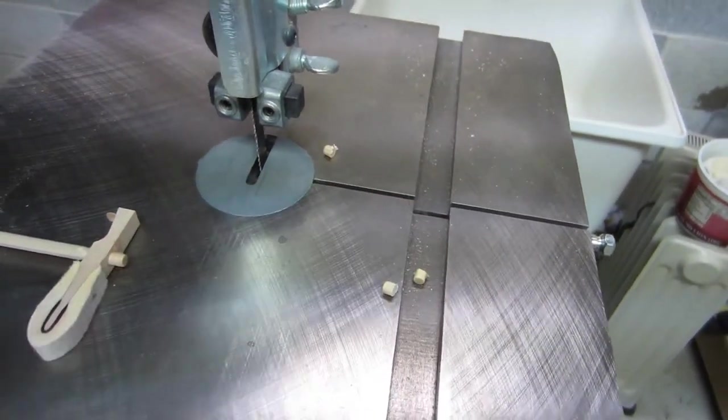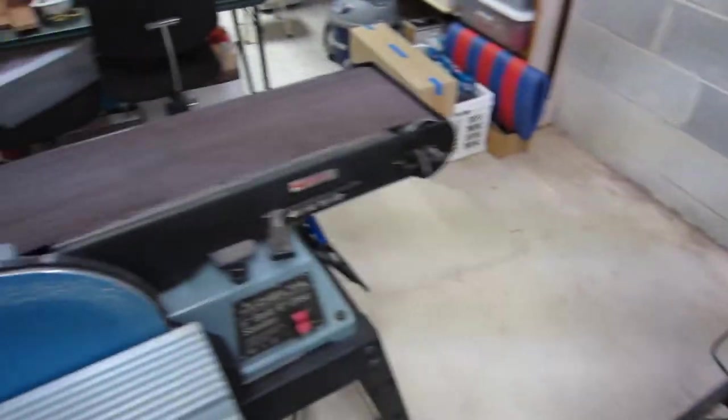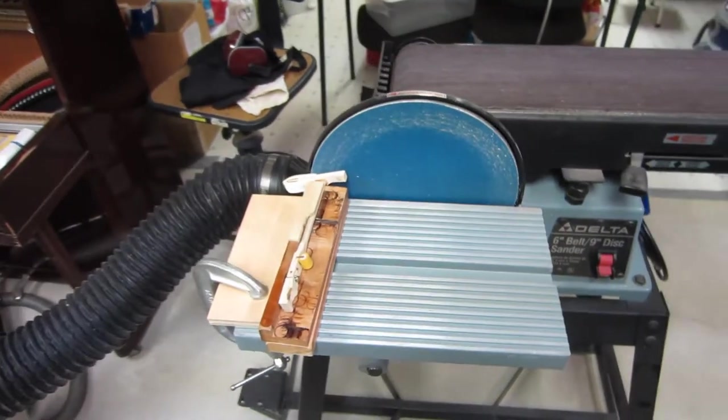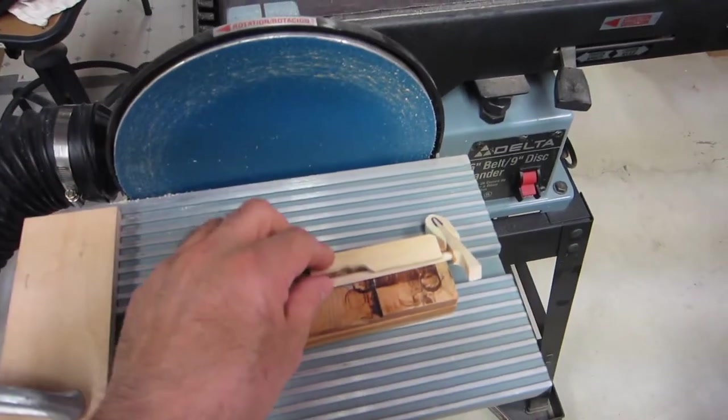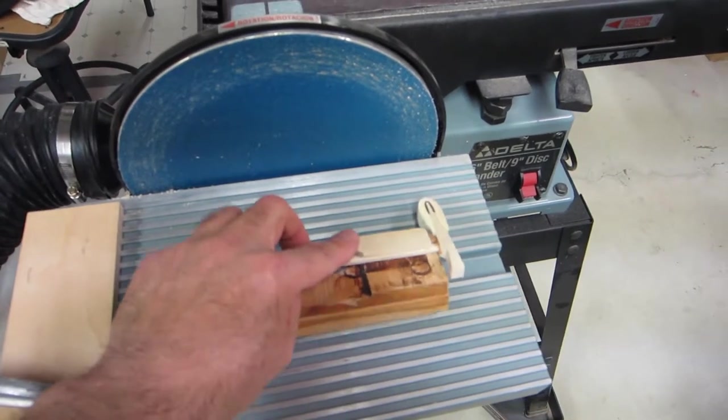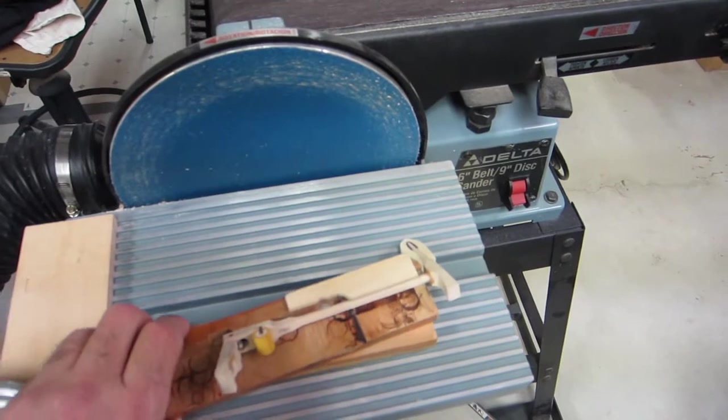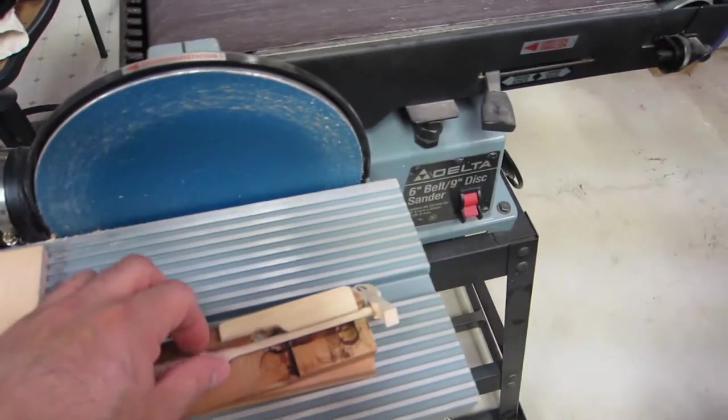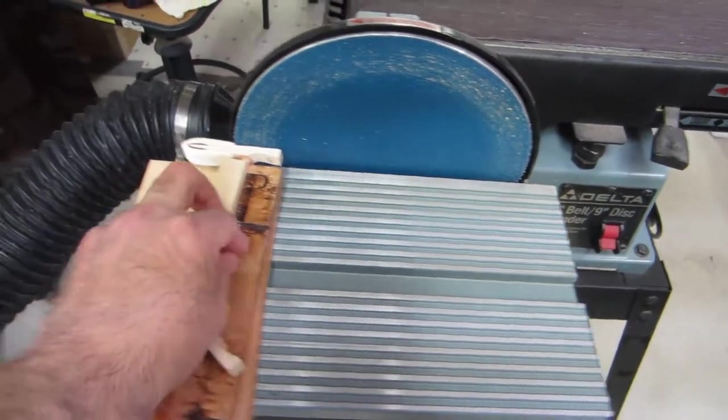Once the shank has been trimmed off, I can go to my sanding machine over here and I've got a little jig set up. This will allow me to arc the tails. This jig I made myself—it swivels and gives a perfect 14 degree arc to the tail and it's held firmly.